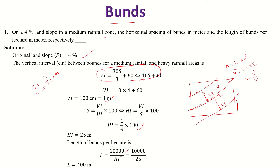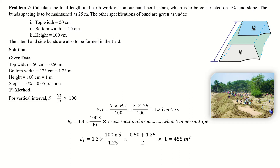Substituting horizontal interval as 25 meters, we get the length. The next problem: calculate the total length and earthwork of the contour bund per hectare on a slope of 5%. The bund spacing is 25 meters. Other specifications of the bund are given: top width and bottom width.